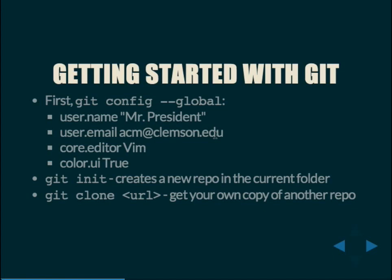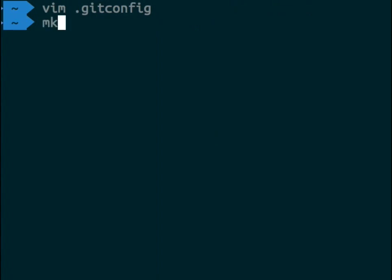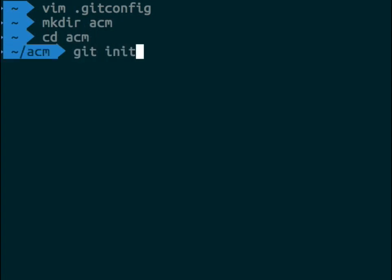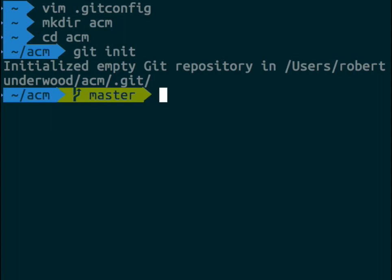There are two different ways to start a project. You can do git init, which starts new projects and creates a new repository in the current location. Git clone is used to start working with a previously existing repository. Git clone normally clones into a new folder; git init turns the current folder into a repository. We'll be working on a new project for most of our examples. We make a new directory, change into it, and call git init, getting the message: 'Initialized empty git repository in /users/robertunderwood/acm/.git'.